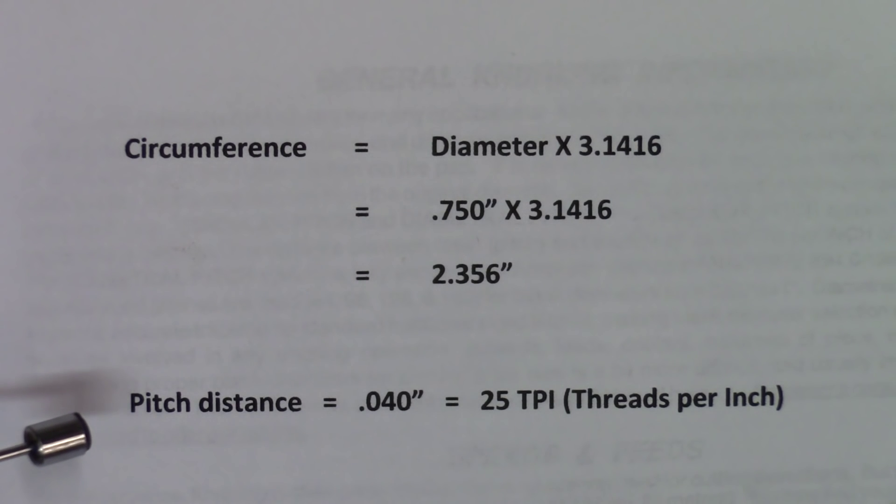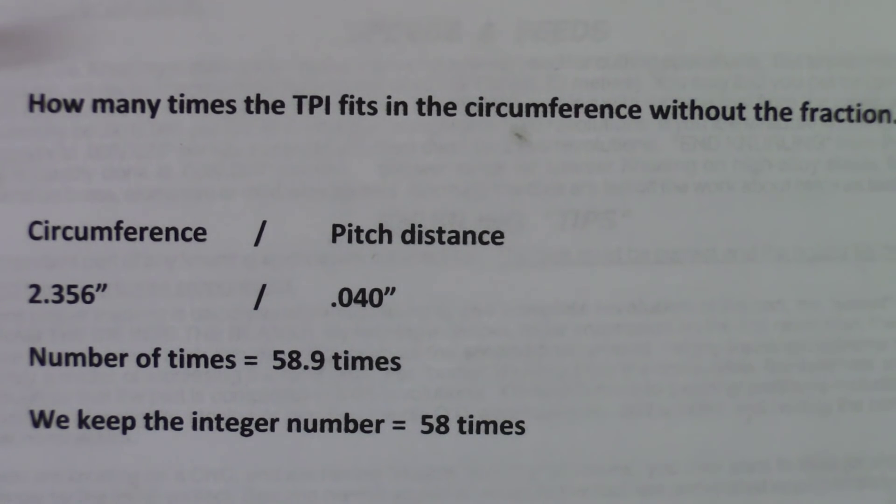We found the pitch distance on the wheel that we're actually using, which is a 25 treads or teeth per inch. The pitch distance is actually 40 thousandths of an inch. We want to know now how many times the teeth per inch or the treads per inch will fit in the circumference, and we don't want the fraction at the end. The circumference is divided by the pitch distance. The circumference is 2 inches 356 thousandths divided by 40 thousandths of an inch. The number of times that the pattern will be in the wheels is 58 times 0.9. We will keep the integral number, which is 58 times.